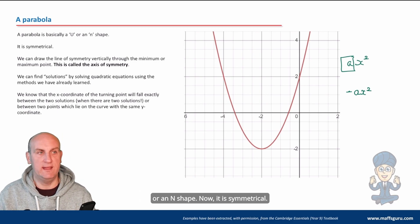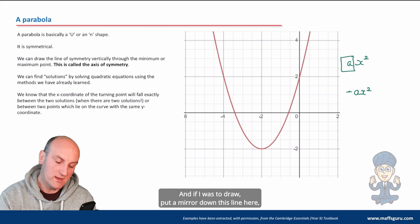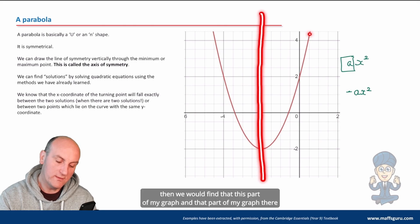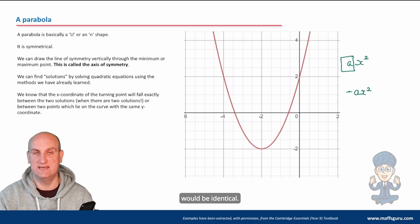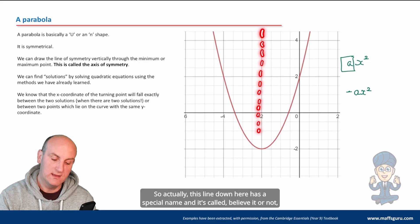It is symmetrical, these things are symmetrical. If I was to put a mirror down this line here, then we would find that this part of my graph and that part of my graph there would be identical.